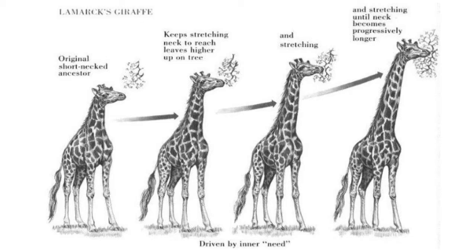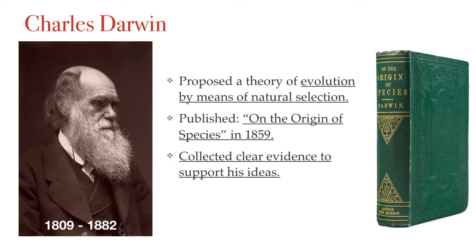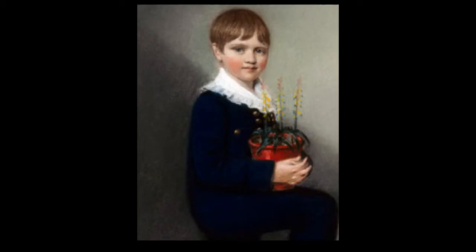What Darwin and Wallace gave the world was a mechanism by which evolution could happen. Not only did Darwin propose an ingenious mechanism for evolution, but he provided a detailed account of this theory when he published On the Origin of Species on November 24th, 1859 — an immediate bestseller backed by clear, well-researched evidence he had collected and worked on for 20 years.